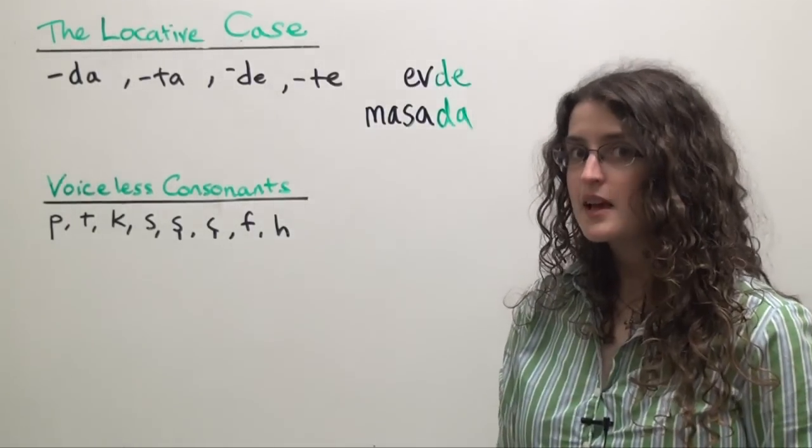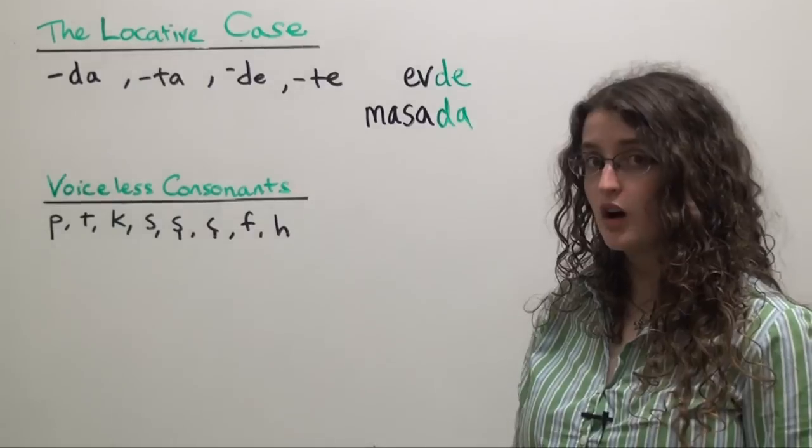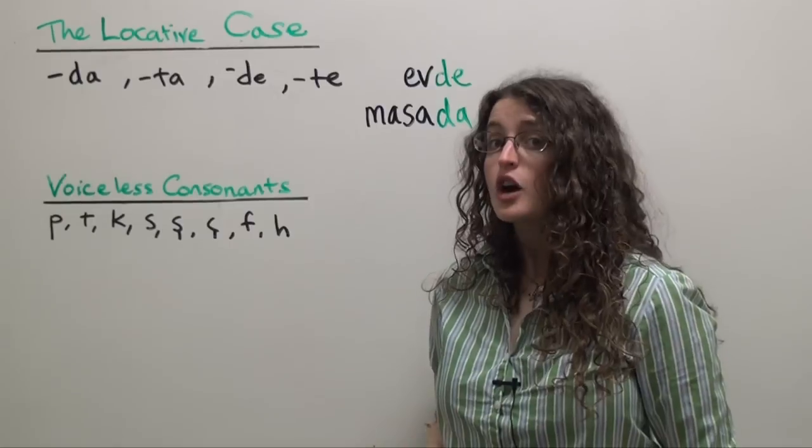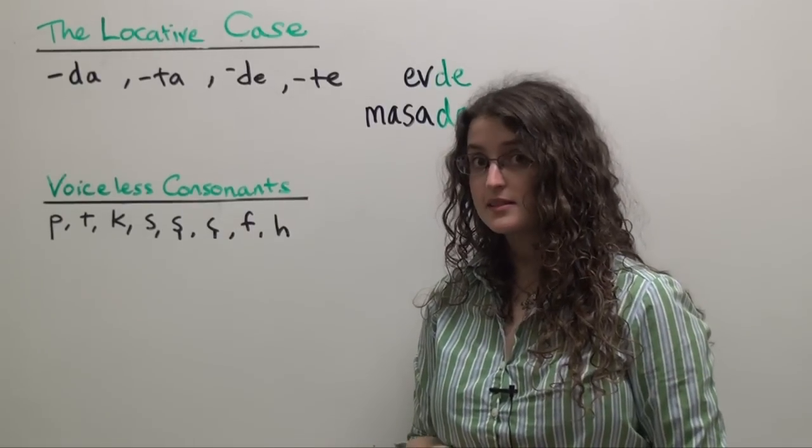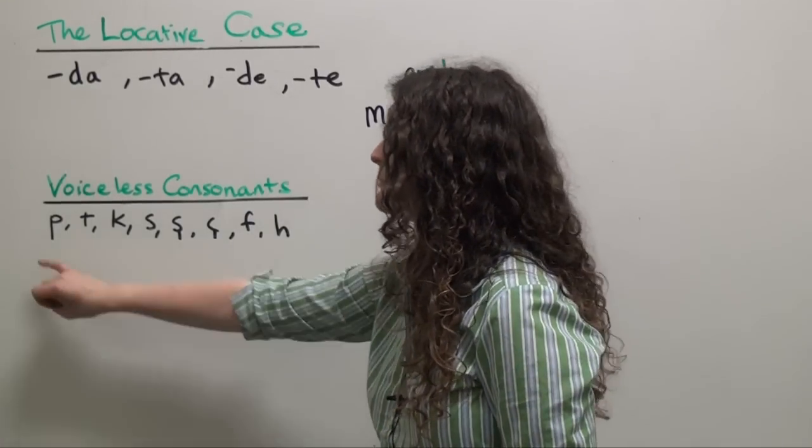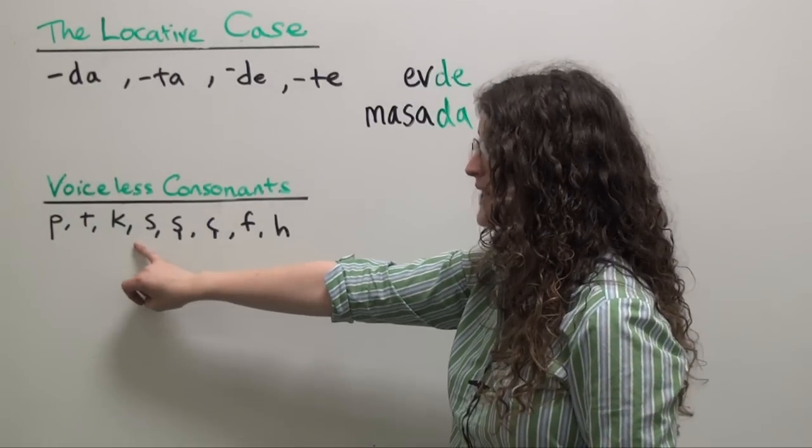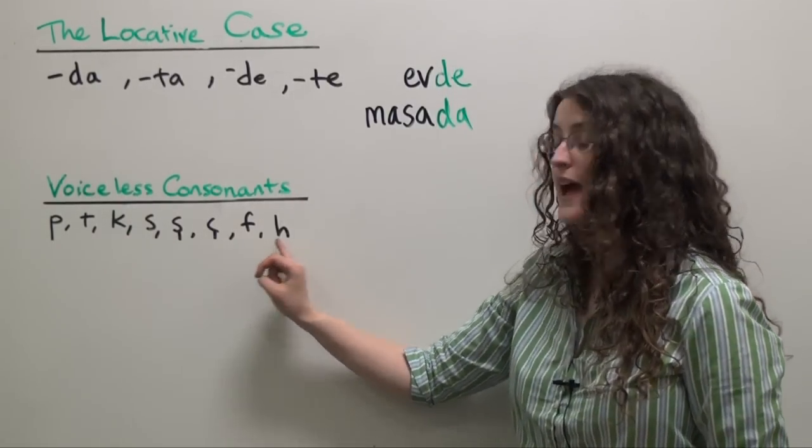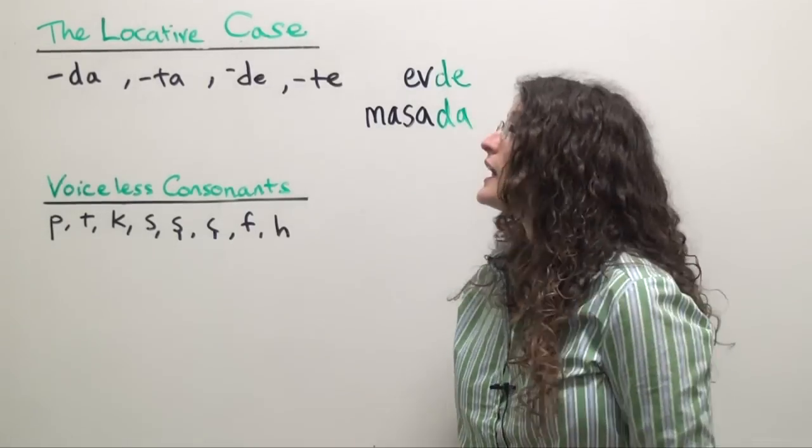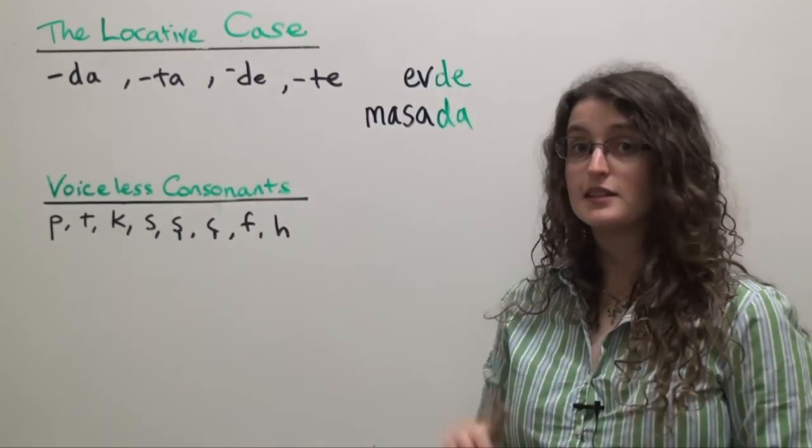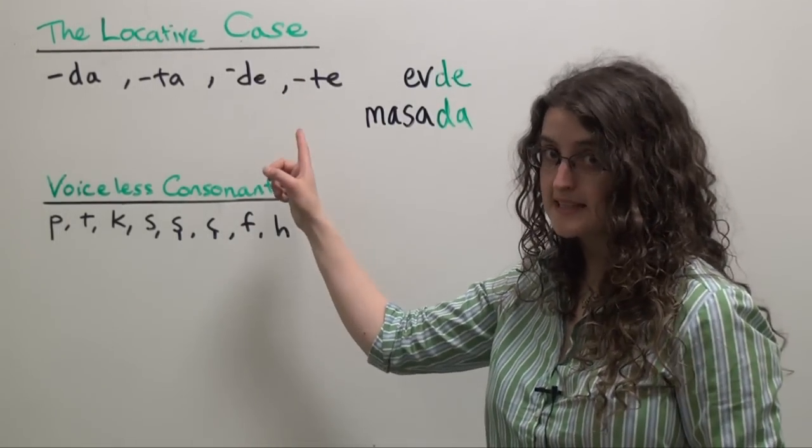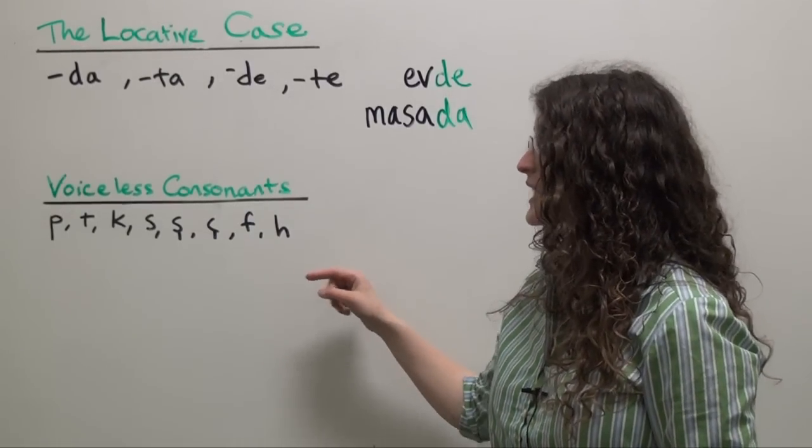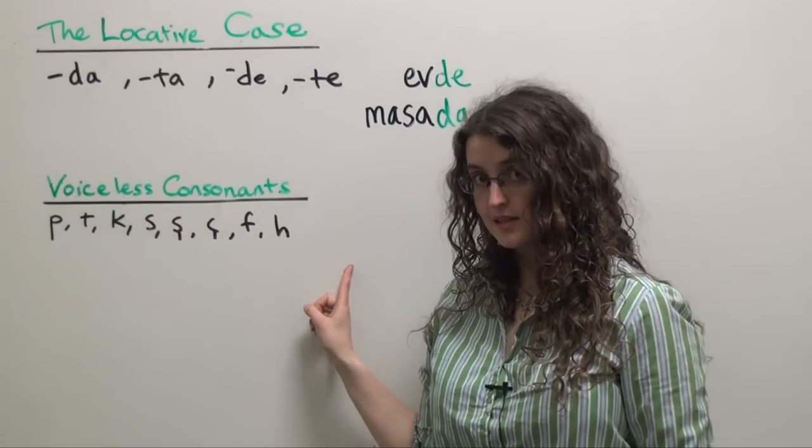Turkish consonants divide into what are called voiced and voiceless consonants. Voiceless consonants in Turkish include P, T, K, S, Ş, Ç, F, and H. If you want to add the locative case ending to a noun or pronoun that ends in one of these voiceless consonants...